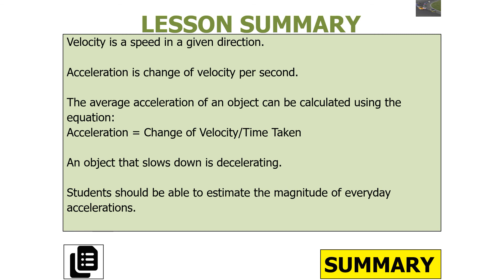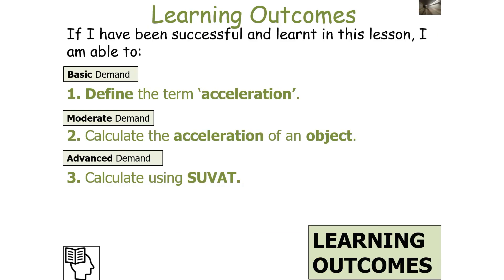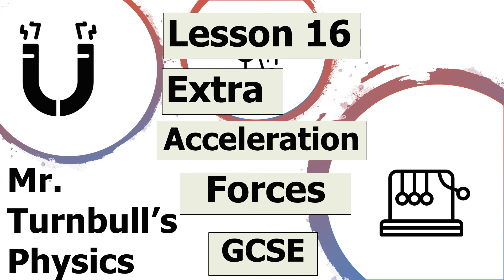To summarise today's lesson: velocity is a speed in a given direction and acceleration is a change of velocity per second. The average acceleration of an object can be calculated using acceleration equals change in velocity over time taken. An object that slows down is decelerating. You should be able to define the term acceleration, calculate values of acceleration for an object, and calculate further values of an object's motion using SUVAT. Thank you very much for watching and have a lovely day.